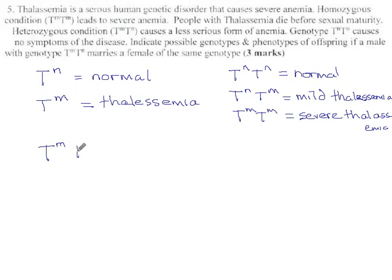So, we have a father with mild thalassemia who marries a female of the same genotype. Okay, so both parents have mild.